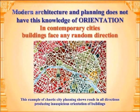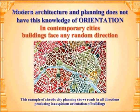In modern architecture and planning, in all modern cities, this value of orientation is not present. If we analyze any existing modern city, any contemporary city, the buildings are facing in random directions because the roads follow a chaotic pattern.